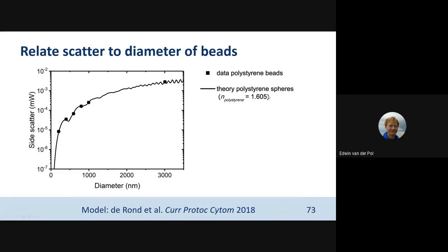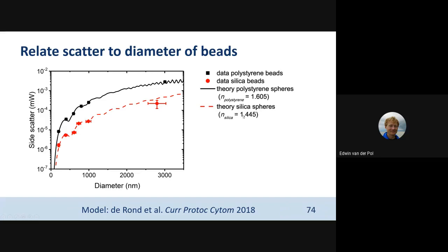We took into account the refractive index of polystyrene, which is 1.605 at the wavelength of this flow cytometer. The theory describes the data well. To show that this approach also worked for particles of a lower refractive index, we repeated this experiment for silica particles — the refractive index of these beads was 1.445 — and again, Mie theory described the data very well.